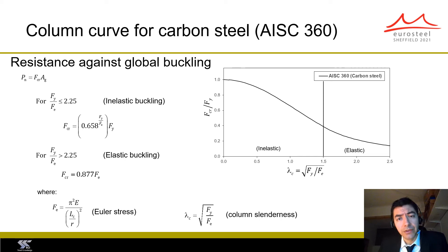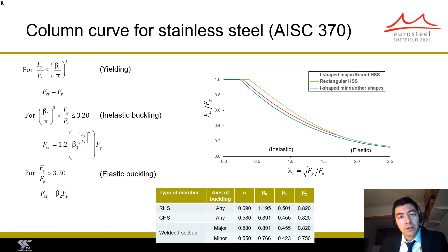This is different from the European approach for carbon steel and stainless steel columns, where all columns have a yield plateau. For stainless steel, AISC 370 will give three curves. The highest curve is for rectangular hollow sections. The next one is for welded or hot-rolled I-sections buckling about the major axis and circular hollow sections. The same curve is used for austenitic and duplex alloys, which is the same as in the stainless steel Eurocode.